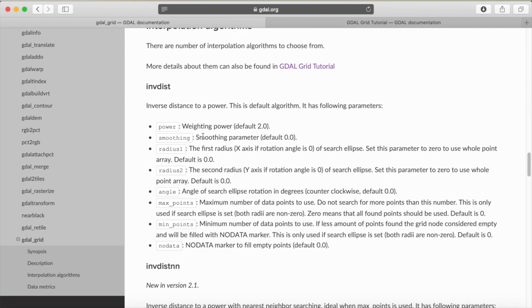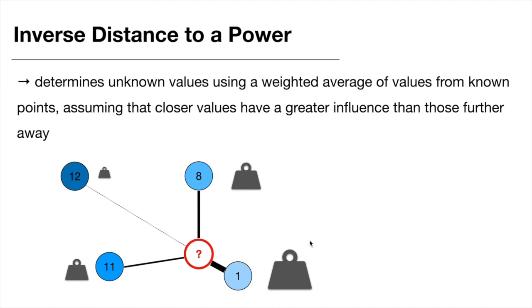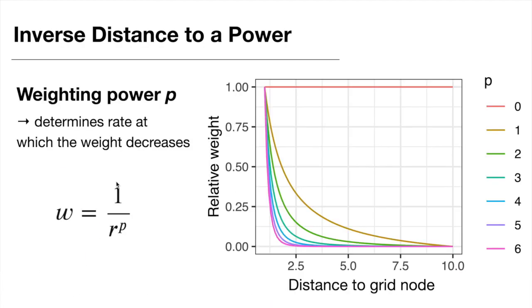Unique to the inverse distance to a power algorithm are the weighting power and a smoothing parameter. The weighting power p determines the rate at which the weight assigned to known points decreases with distance to our unknown point. The weight assigned to every known point equals the inverse of the distance between the known point and the unknown grid point, raised to the weighting power p. To explore this, you can plug in different distance values, repeat for different p values, and get the corresponding weights.